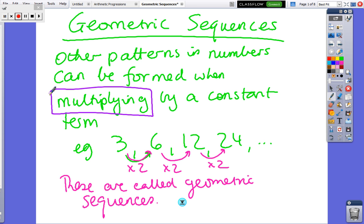For instance, in the pattern 3, 6, 12, 24, we start with 3 and then we just double the numbers in sequence. These are called geometric sequences, and they actually have a lot more applications in real life than arithmetic sequences.